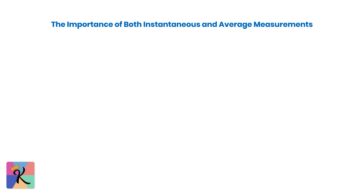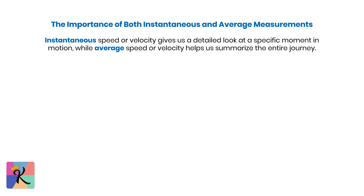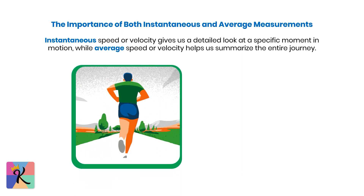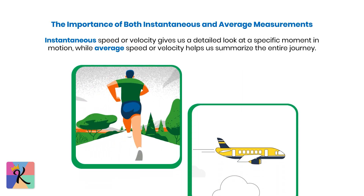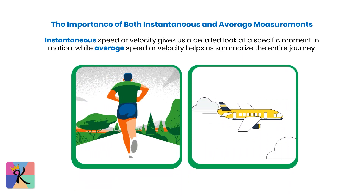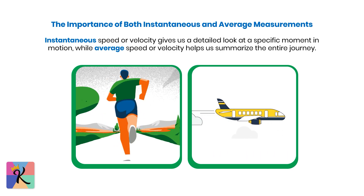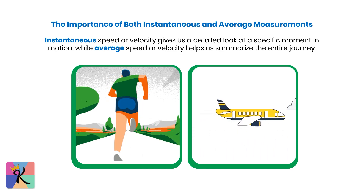Both instantaneous and average measurements are important. Instantaneous speed or velocity gives us a detailed look at a specific moment in motion, while average speed or velocity helps us summarize the entire journey. These two perspectives help us analyze the complexities of motion, whether it's understanding the varying pace of a runner or capturing the overall flight path of a plane — both are crucial for an accurate understanding of movement.